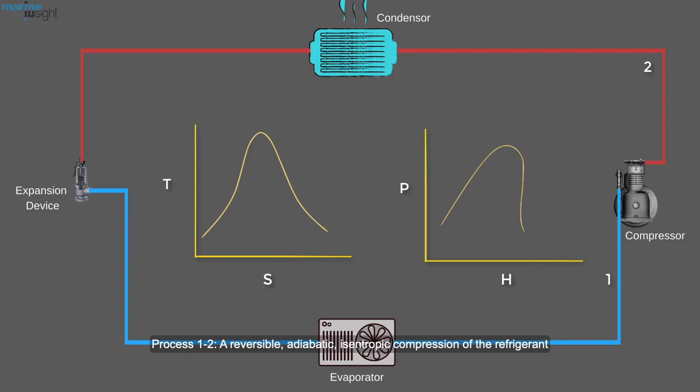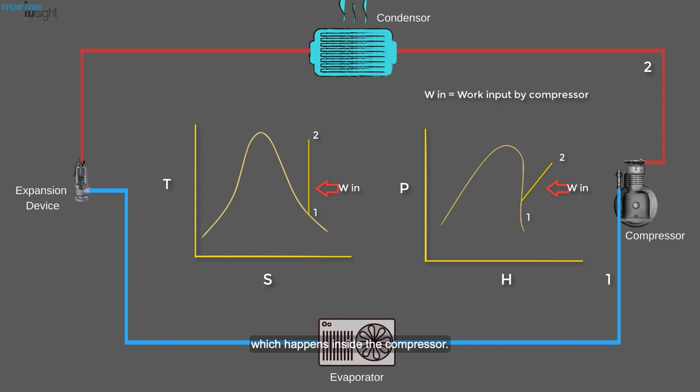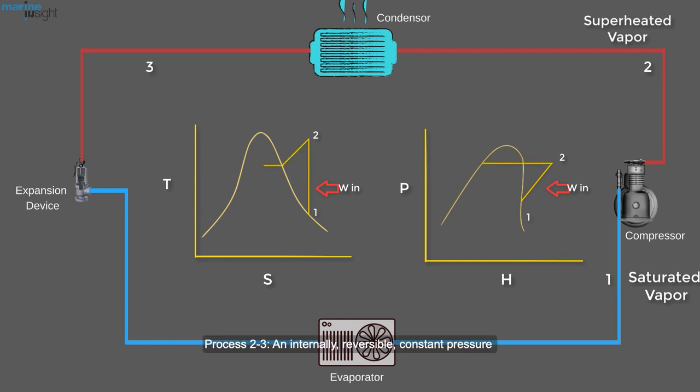Process 1-2: A reversible, adiabatic, isentropic compression of the refrigerant, which happens inside the compressor. The saturated vapor at state 1 is superheated to state 2.